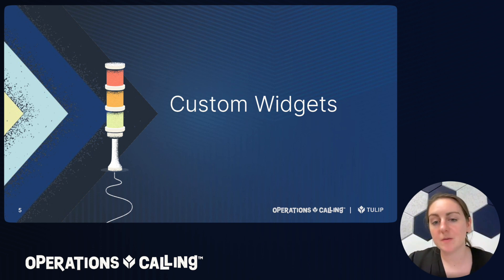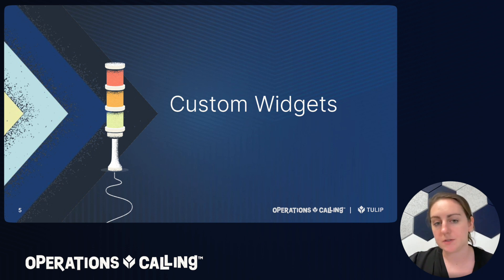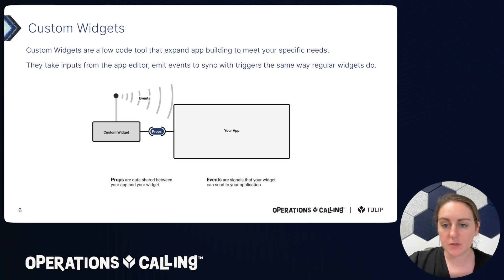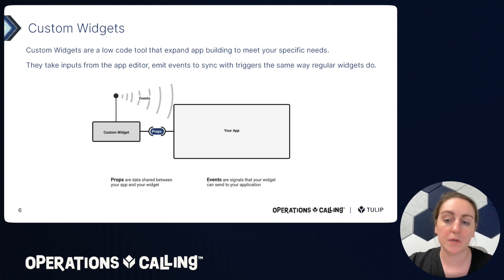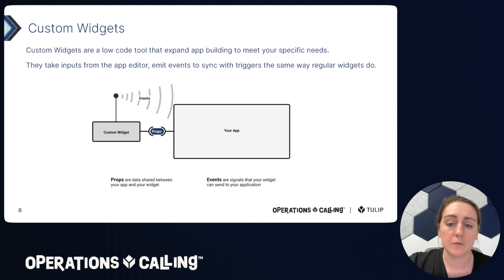One of the first pieces of low code at Tulip we want to cover is custom widgets. Just like in the Tulip app editor you can have normal widgets — buttons, inputs, interactive tables, plain text — custom widgets are similar, except instead of Tulip's engineering team writing the widget and testing its functionality and visualization, we offer a framework for you to do that in your Tulip solutions. Custom widgets allow you to input things from the app editor via props and emit events back via callbacks — these are highly customizable and open up a lot of functionality for you as an app builder.